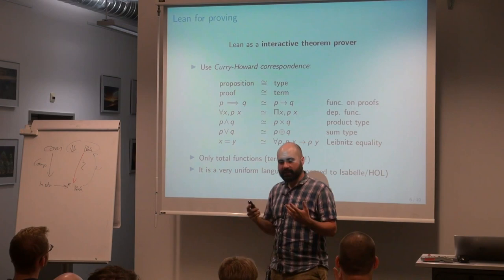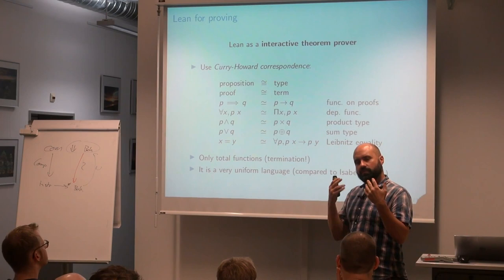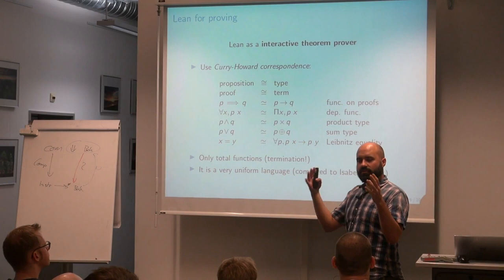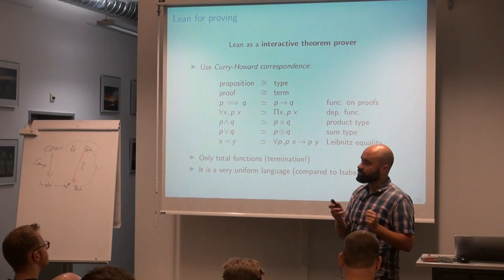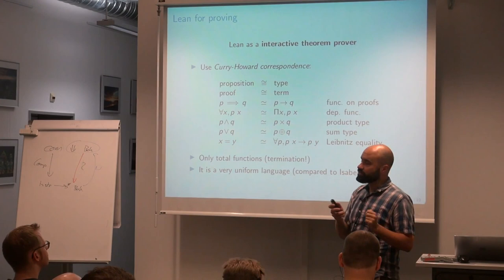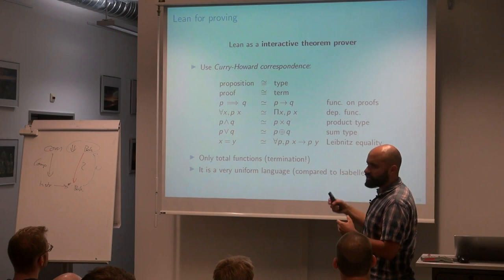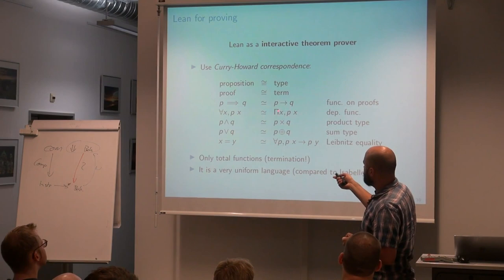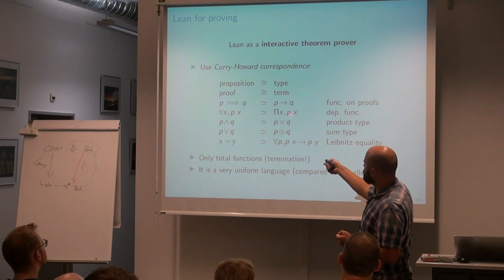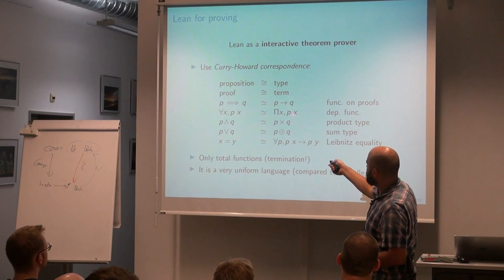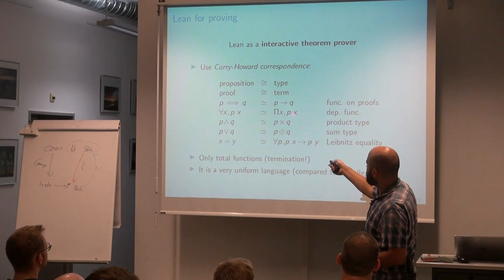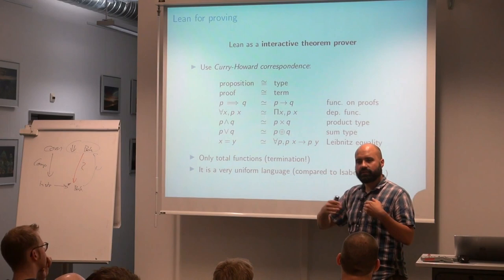How do you actually prove things in Lean? The idea is the Curry-Howard correspondence: each logical proposition corresponds to a type, and if that type is inhabited — if I can produce a term of that type — then that term is a proof of the original proposition. For example, an implication P implies Q corresponds to a function that takes a proof of P and produces a proof of Q. A dependent function corresponds to the universal quantifier.